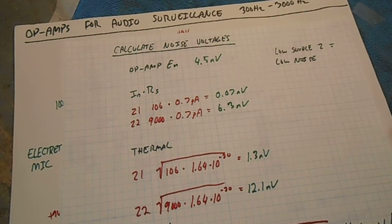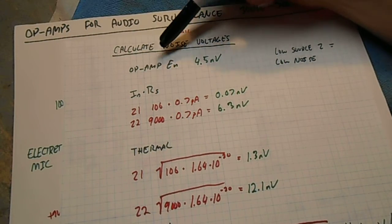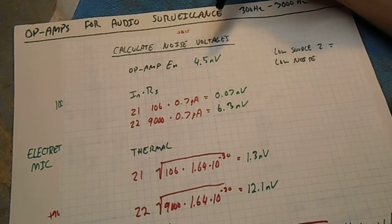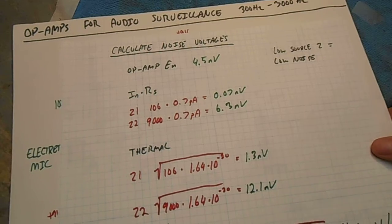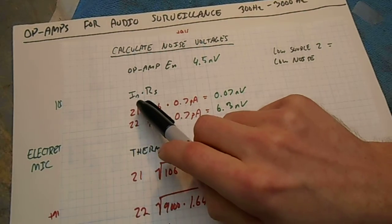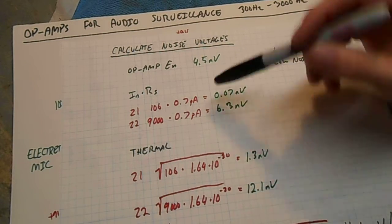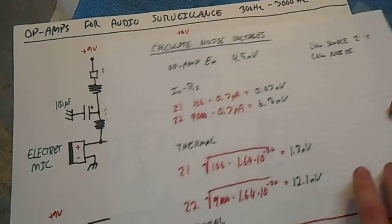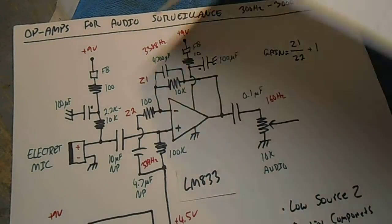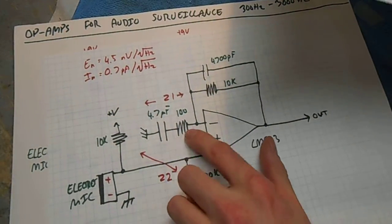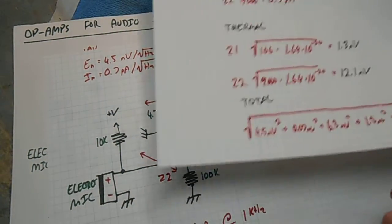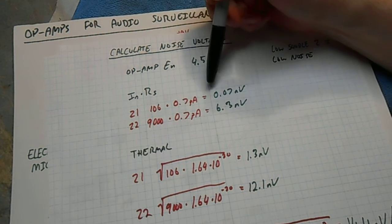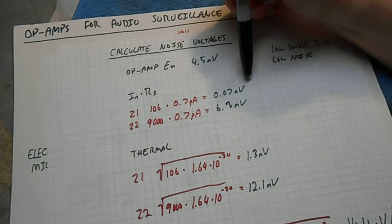Now we need to calculate the actual noise voltages. We have the op-amp E sub N we're taken from the datasheet, which is 4.5 nanovolts. We have our two I sub N times R sub S noise sources. We take the Z1, which is 106 ohms. That was our series combination Z1. 106 times 0.7 picoamps, we get 0.07 nanovolts.